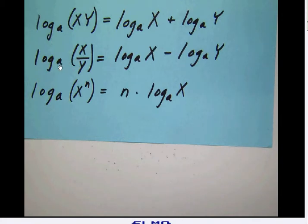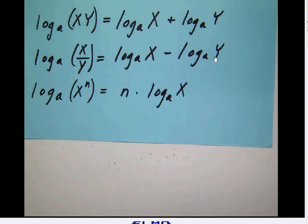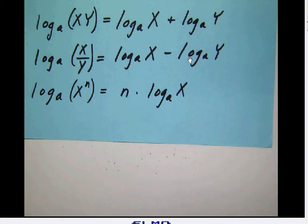The second rule: the logarithm to the base a of the quotient x divided by y equals the logarithm to the base a of x minus the log to the base a of y. When you divide numbers, you subtract their exponents, and since logarithms and exponents are the same thing, you subtract their logarithms.